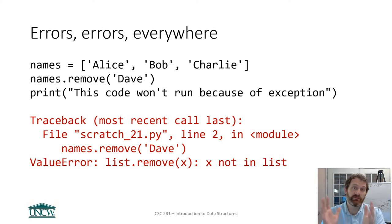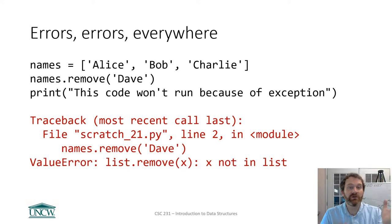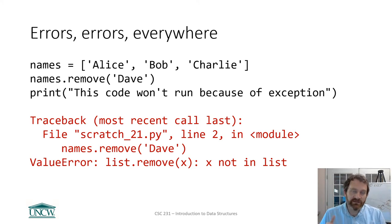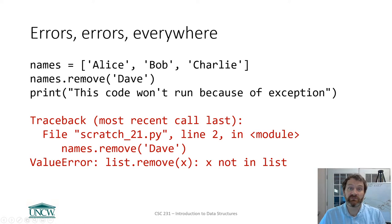Maybe you the programmer, if Dave isn't in the list, maybe you don't care and you just move on. But by default, if an exception is raised — and that's what we call it, an exception has been raised — the code stops. This print line will not execute when an exception is raised; the program stops.